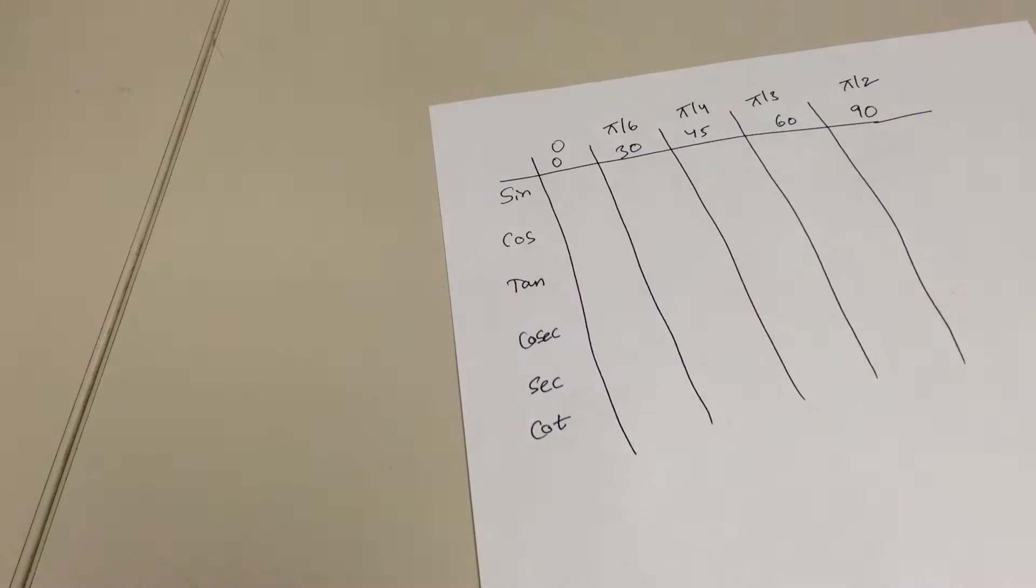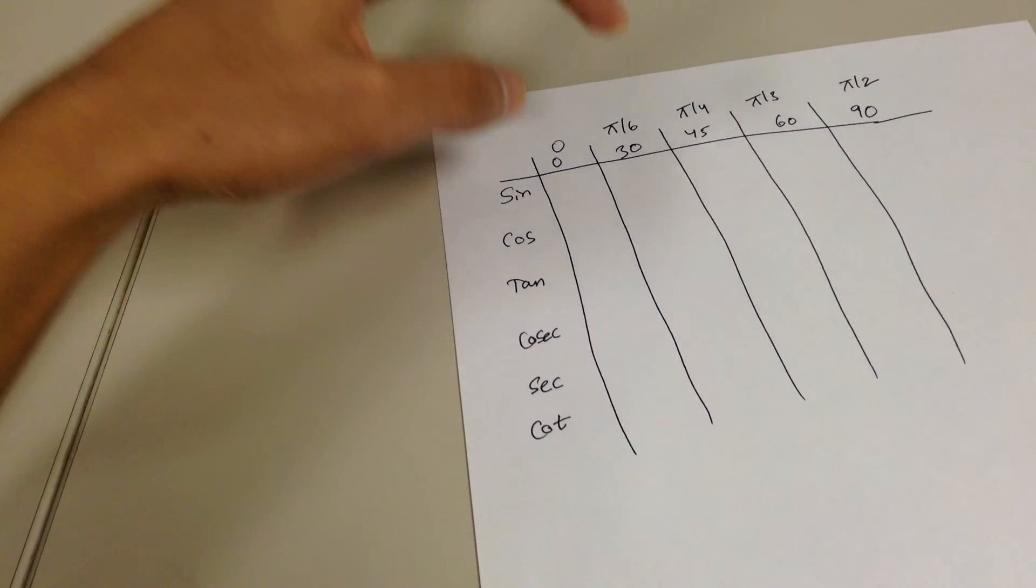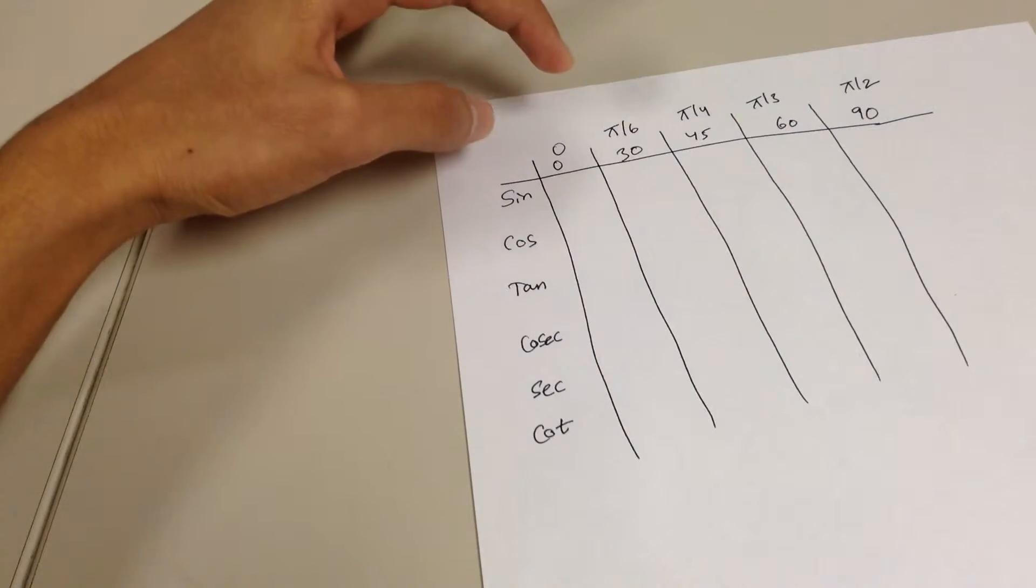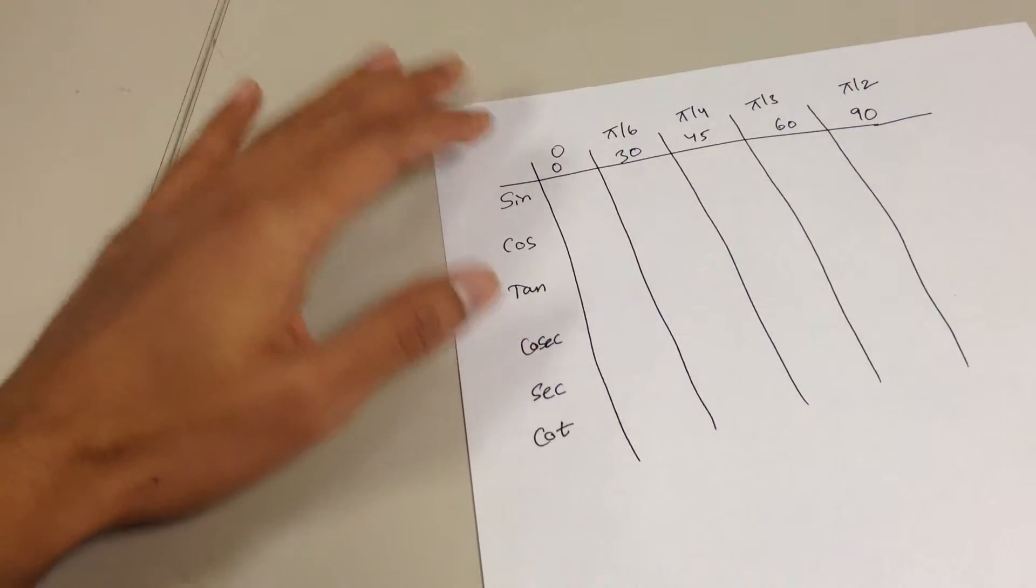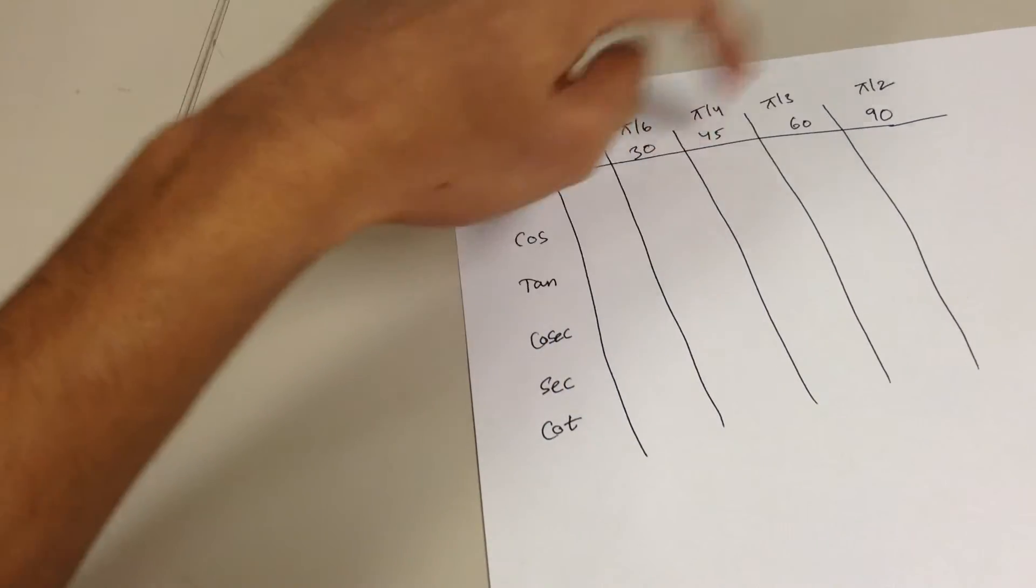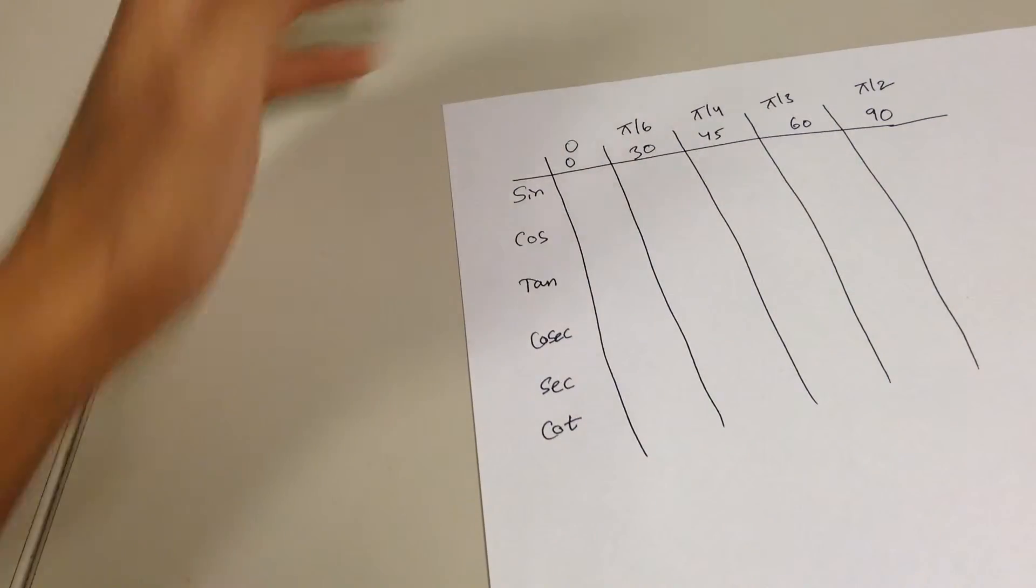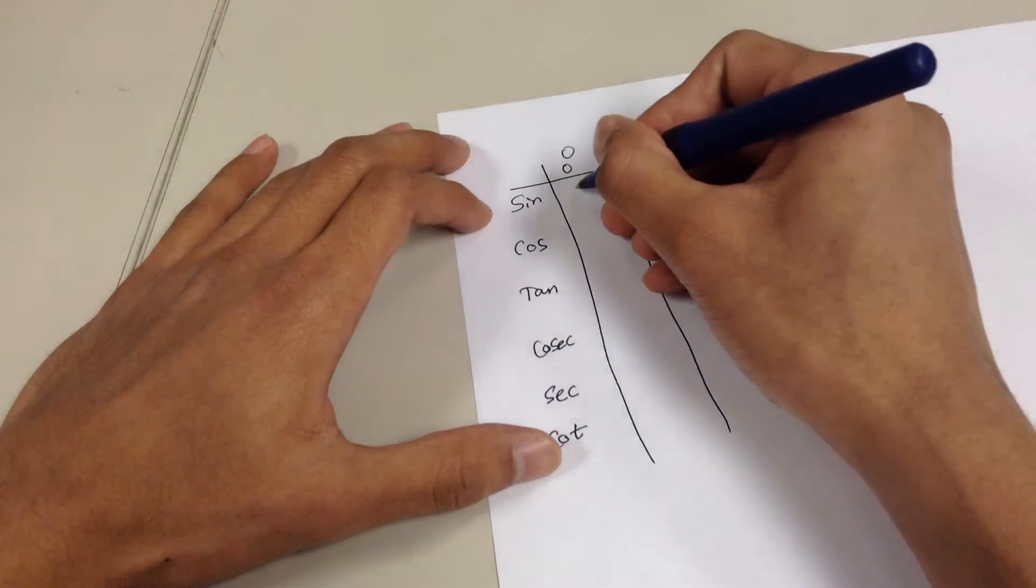Now all you have to do is memorize just one single row for sine. And then once you have those values down, you can generate the entire table all by yourself from just one single row. So let's get to it. The three values out of these five angles are real simple. It's just 0, 1, and half.